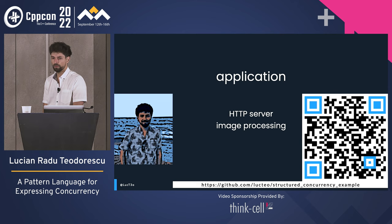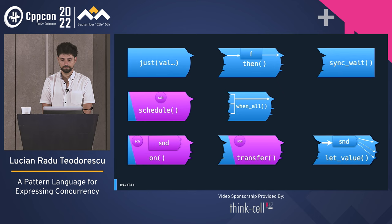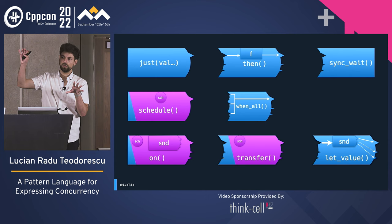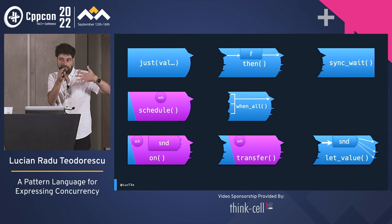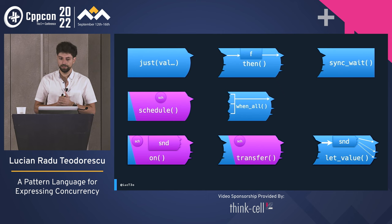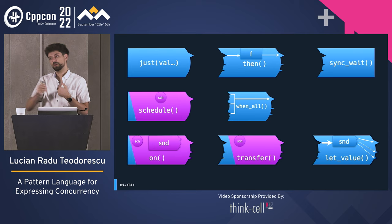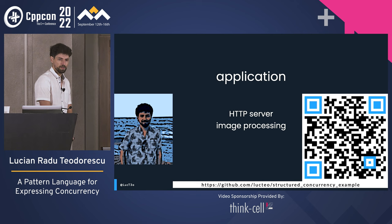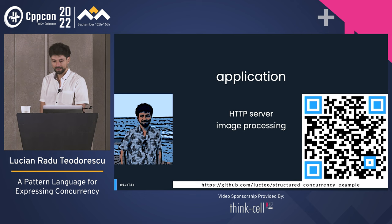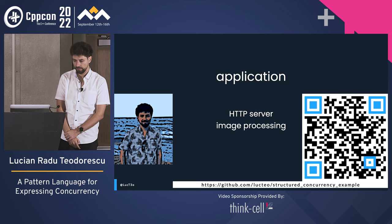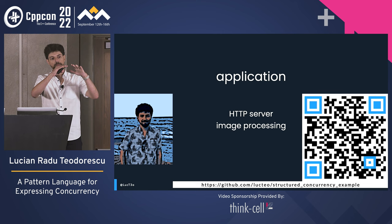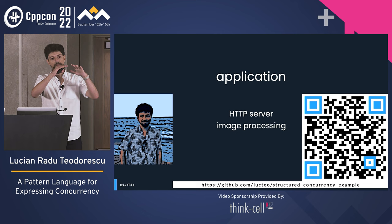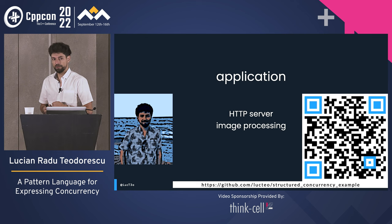I'm going to build an HTTP server that does image processing. The source code is available at a link shown. For example, give it a picture of myself and it will cartoonify it. I'll step through this application from the top down using the visual language we've developed to show how it all composes nicely. The first idea is that the entire application can be represented as a sender. In main, I have a sender and sync_wait on it. I'll break it down into get_main_sender and sync_wait, which breaks down into 'just' to start the flow and then logic.